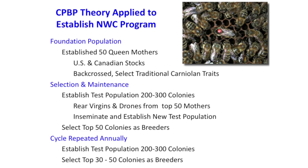What we initially did is collect stock from all over the U.S. and Canada. A lot of this was pretty mixed up, so I was pulling out the darker, Carniolan-like queens and backcrossing that a couple of generations to try to get a more Carniolan-like bee. We established a test population — from those I picked out 30 to 50 queens, made daughter queens, taking 5 or 10 out of those to create this test population. From those you select out the top section and just repeat that cycle every year. That's a quick summary of it.